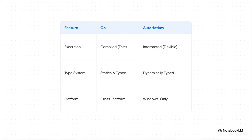This table really just nails it down. Look at execution: Go is compiled — it gets turned into a lightning-fast native app. That's the finely-tuned engine in our F1 car. AutoHotKey is an interpreted script — a little slower, but it gives you that on-the-fly flexibility, like pulling out the right tool from your Swiss army knife at a moment's notice.